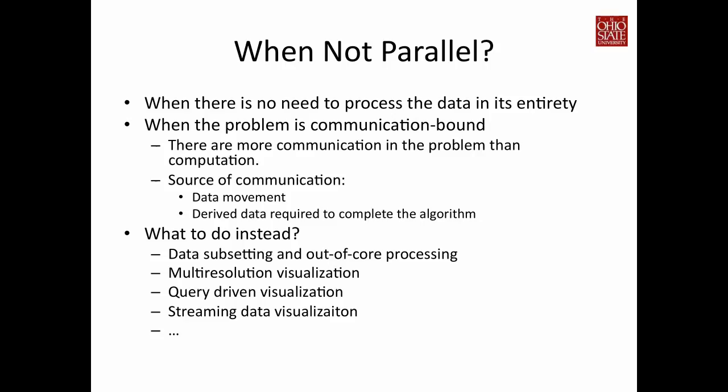What are the sources of communication? It can be data movement — if you need to pass data around among different processors to compute your visualization output, then your problem may be communication bound. Or if you generate a lot of intermediate data, also called derived data, that also requires communication among the processors before a task can be completed, your problem can also be communication bound. In both situations, you may not be able to take full advantage of parallel computers.